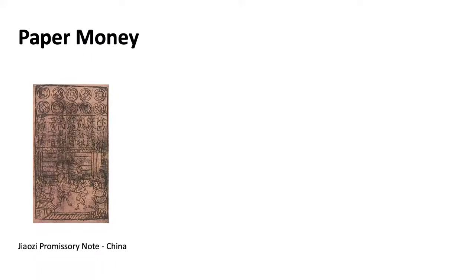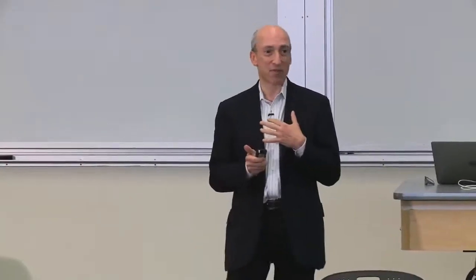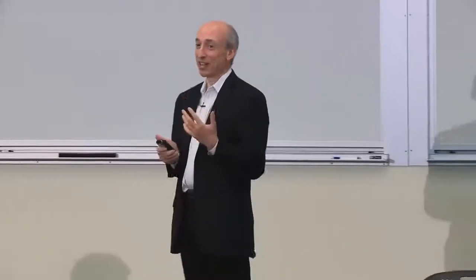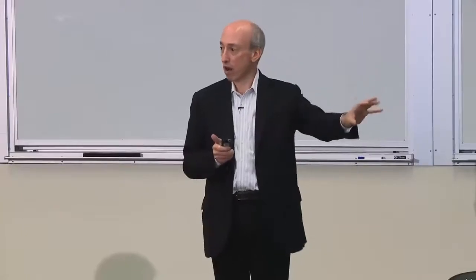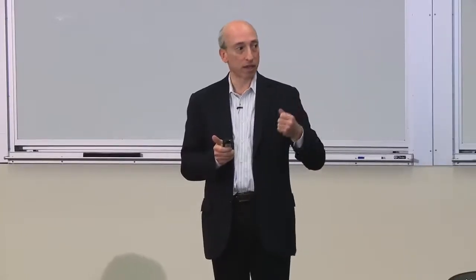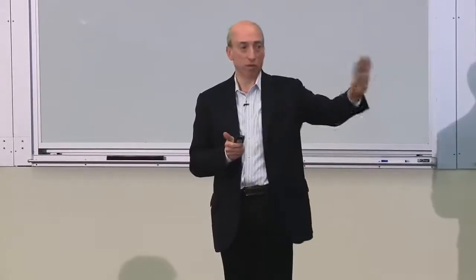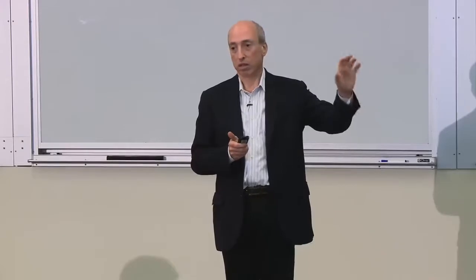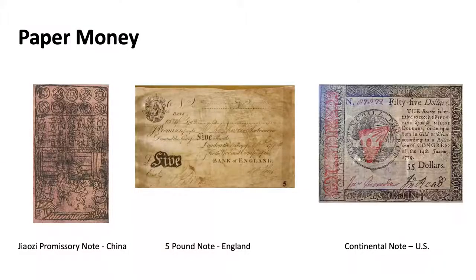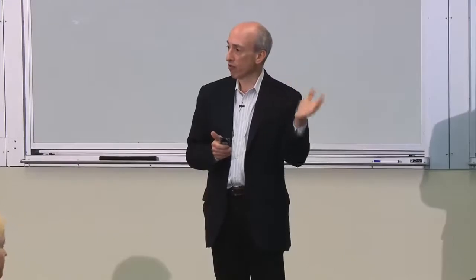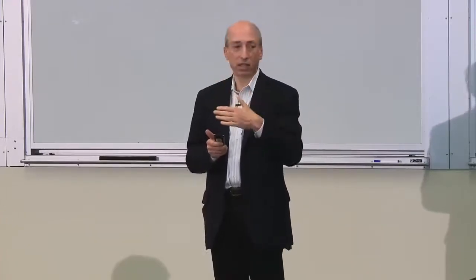I spent five years running the Commodity Futures Trading Commission and learned a lot about warehouse receipts — where you put a commodity in a warehouse and got a piece of paper saying yes, you have that commodity there. So the first paper monies were basically warehouse receipts in China. Whatever it was — grain or gold — you had a piece of paper backing it. The note from China is about 700 years old.